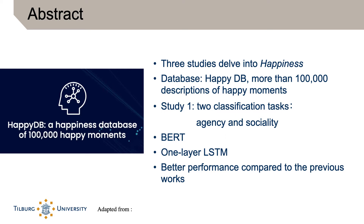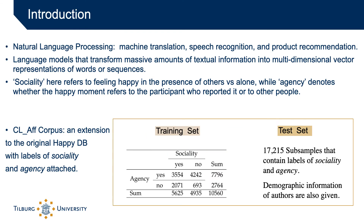We apply the state-of-the-art word embedding algorithm BERT to transform all happy moments to context-sensitive representations and then feed them to a one-layer LSTM. We found that the proposed setup improves in performance compared to previous works. Natural language processing has been used to decipher human language, and tasks in this field such as machine translation, speech recognition, and product recommendation have vastly improved over the last few years.